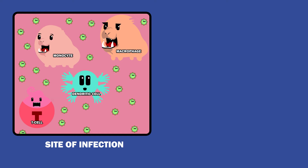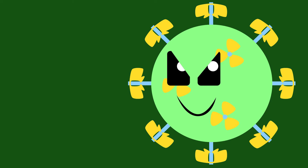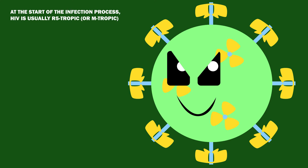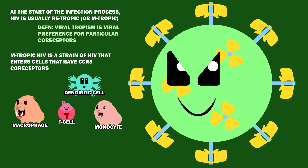Initially, replication occurs within immune cells at the site of infection, or in peripheral blood mononuclear cells. At the start of the infection process, HIV is usually R5-tropic, or M-tropic. Viral tropism is viral preference for particular co-receptors. M-tropic HIV is a strain that enters and infects cells with CCR5 co-receptors — T-cells, macrophages, monocytes, and dendritic cells.